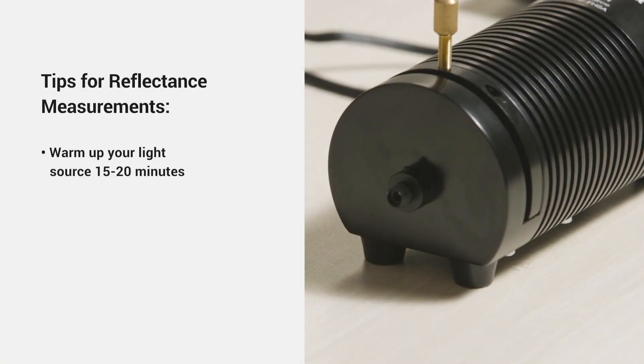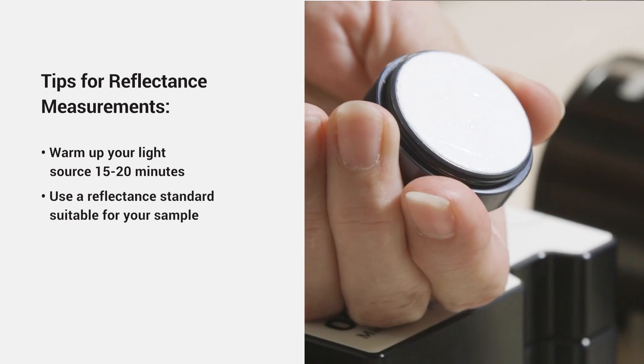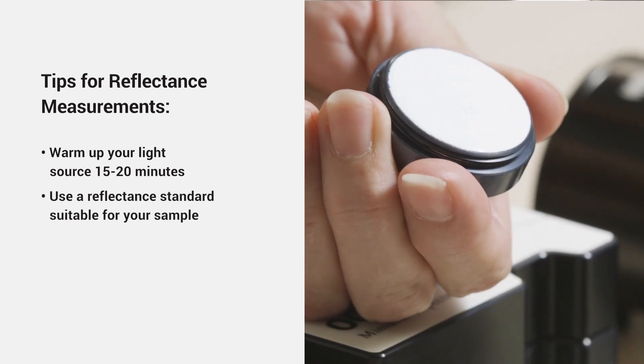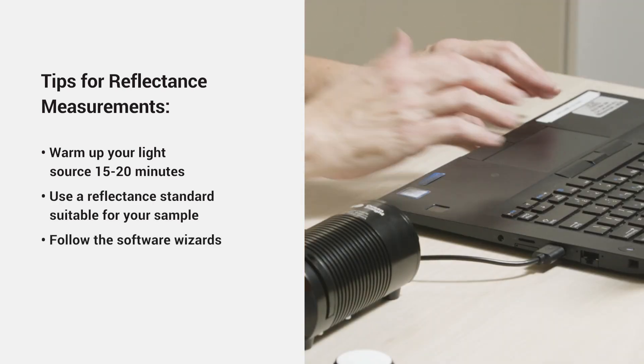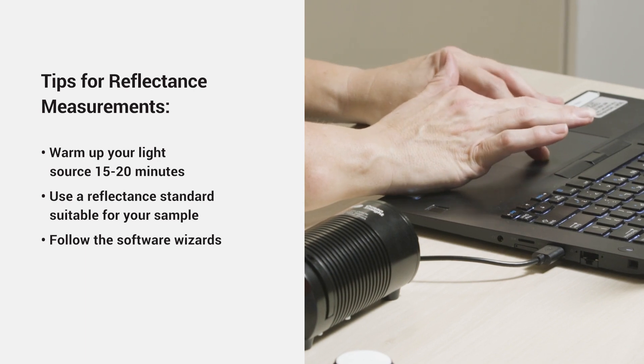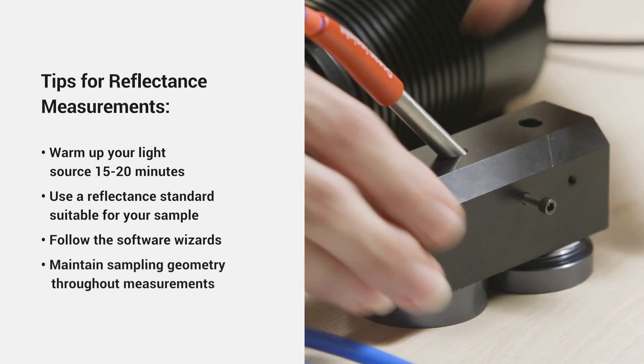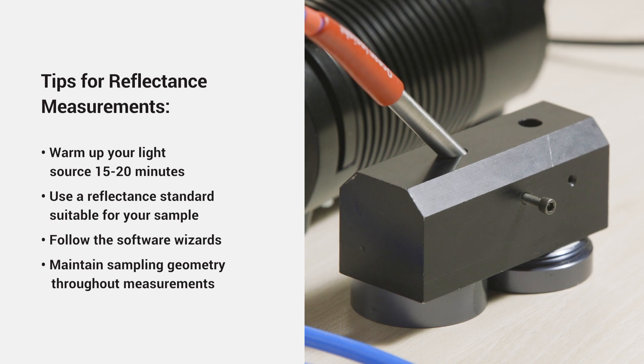So we covered setting up the software. Don't forget to warm up your light source for 15 to 20 minutes. We've talked about measuring your reference, measuring your dark, getting into reflectance mode. And in this case, we took it a step further and actually went into a color processing mode to get quantitative color.